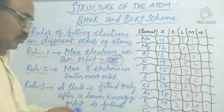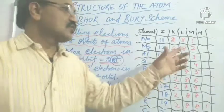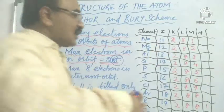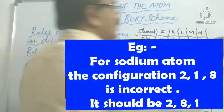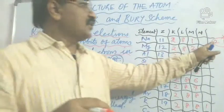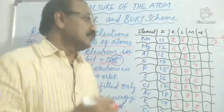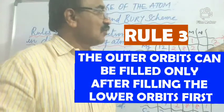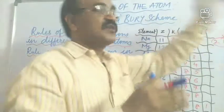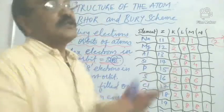What about rule three? I touched on rule three while explaining the electronic configuration. Why are we not filling the orbits out of order? For example, why should sodium be written as 2, 8, 1 and not as 2, 0, 8, 1 skipping ahead? That is wrong because the filling should go in order. The lower orbits should be filled first, then the higher orbits with greater energy. Only once filling of a lower orbit is complete can the next orbit be filled. This is called the Aufbau principle.